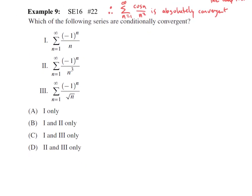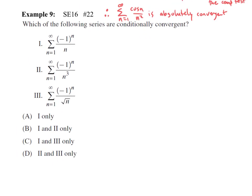Let's move on to example 9: which of the following are conditionally convergent? Conditional convergence means the series is convergent, but if you take the absolute value of terms it is no longer convergent — similar to the harmonic series, which is number one. That first one fits: it is convergent by the alternating series test, but if you take the absolute value it's the harmonic series, which is divergent.